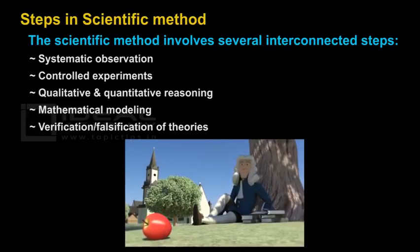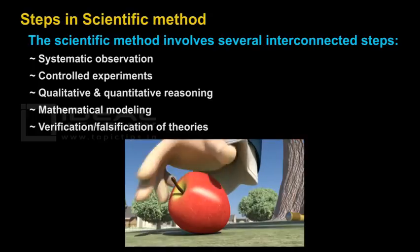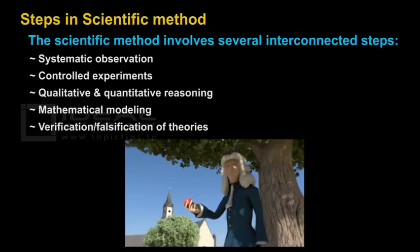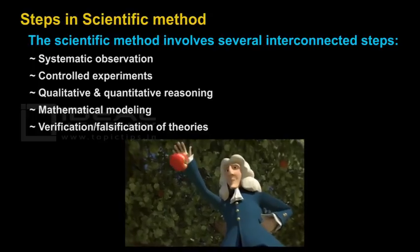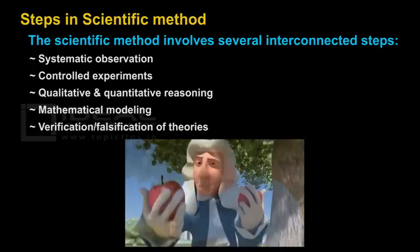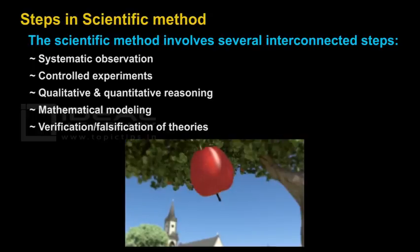Suddenly, Newton observed an apple falling downward. Then he thought, why did the apple fall downward? So he keenly observed the phenomenon and deeply thought about it.